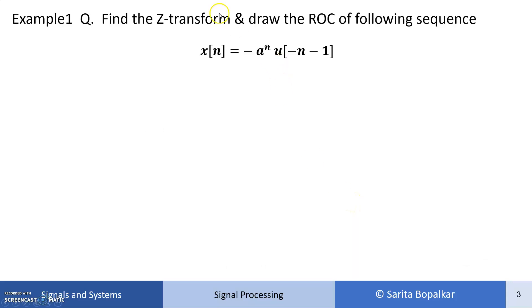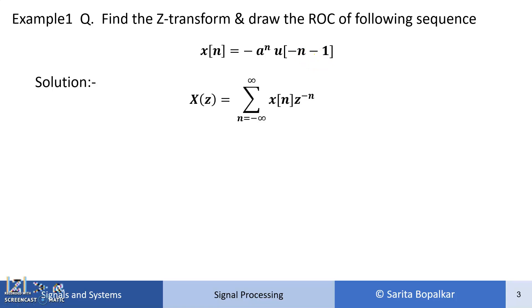Find the Z transform and draw its ROC for the following sequence. The sequence is X of n is equal to minus a raised to n, times u of minus n minus 1. We will write the definition of Z transform: X of Z equals the summation from minus infinity to infinity of X of n times Z raised to minus n, and our X of n is minus a raised to n times u of minus n minus 1.